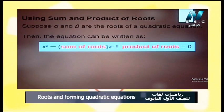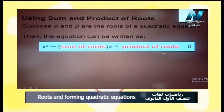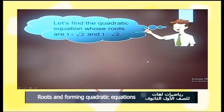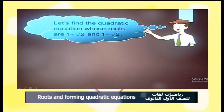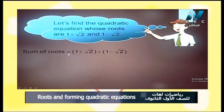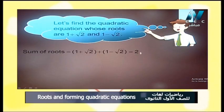Using sum and product of roots: suppose alpha and beta are the two roots. Then the equation can be written as x² minus (sum of the two roots)x plus (product of the two roots) equals 0. This is a new and easy form.